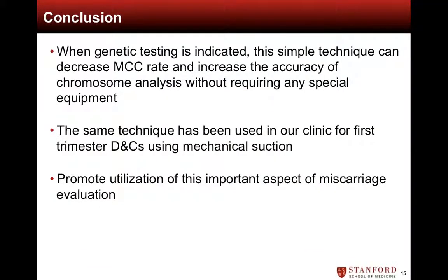In this video, we have demonstrated that when genetic testing of miscarriage tissue is indicated, this simple technique can decrease MCC rate and increase the accuracy of testing without requiring any special equipment. The same technique for identifying villi has been used in our clinic for first-trimester D&Cs using mechanical suction. We hope that by demonstrating this technique, we can promote the utilization of this important aspect of miscarriage evaluation. Thank you for your attention.